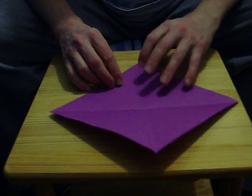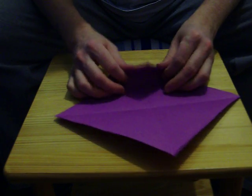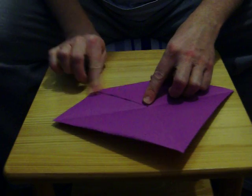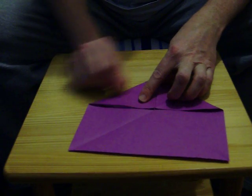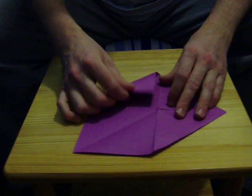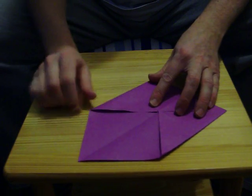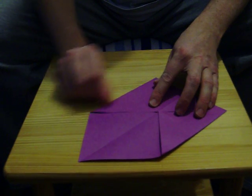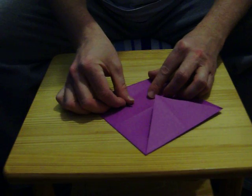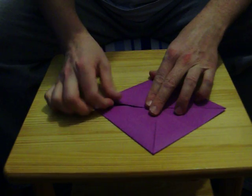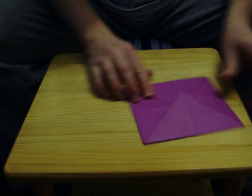Now fold each quarter to the center and make sure that you crease the paper very well. It's usually good to use your thumbnail to do the crease. There's the last corner, so now it looks like that.